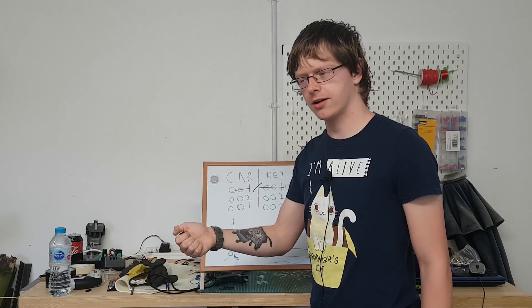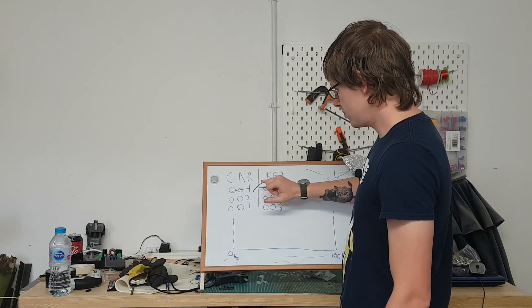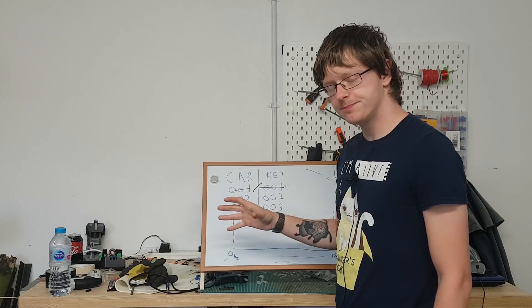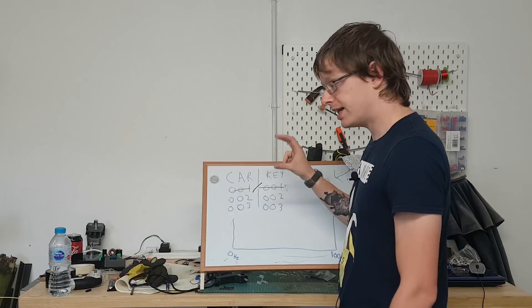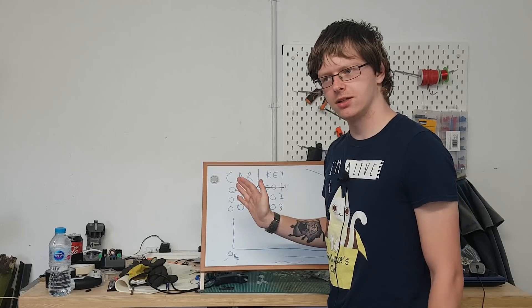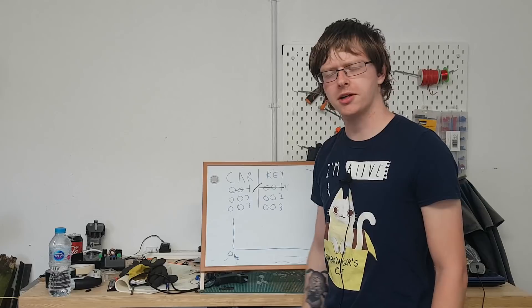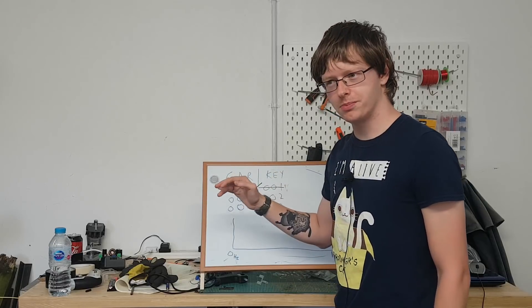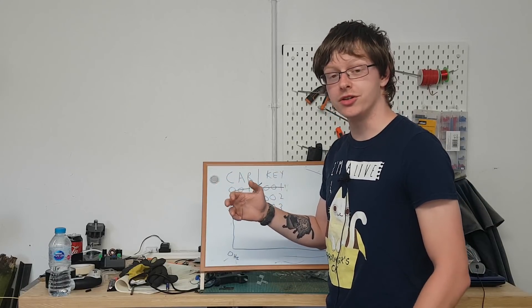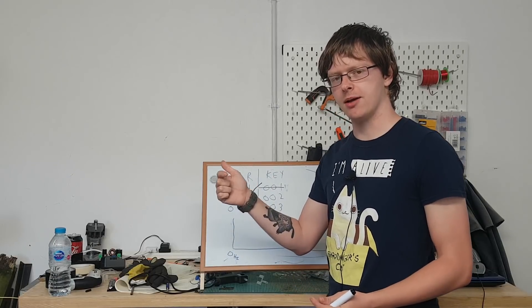Now the way that the car listens for things is how you actually do this. Because if you think about it, if you've jammed that signal, the person's gonna hit the key again to try and unlock their car. So in order to be undiscovered, to be as discrete as possible, you need to also have a way of letting them unlock the car but still keeping the code that you need.